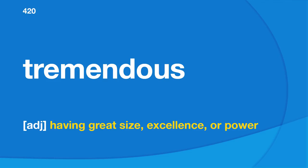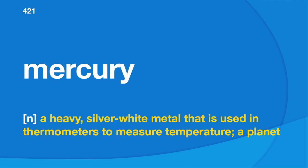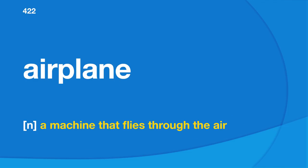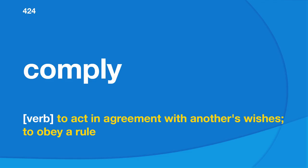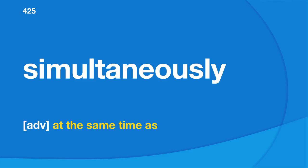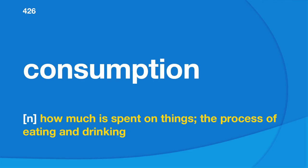Cord: a long, strong material, thicker than string but not as thick as rope; an electrical wire. Comply: to act in agreement with another's wishes, to obey a rule. Simultaneously: at the same time as. Consumption: how much is spent on things; the process of eating and drinking. Replicate: to repeat something, such as an experiment, study, or process. Mole: a small animal with dark fur that lives under the ground; a unit for measuring molecules. Organ: large wind instrument similar to a piano.